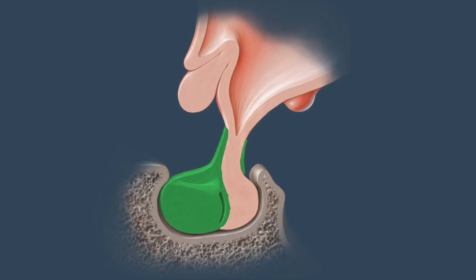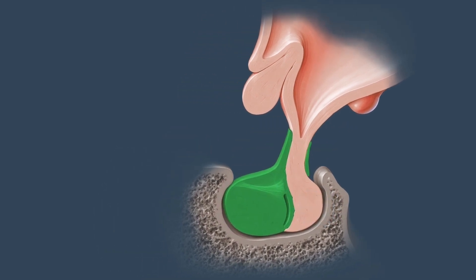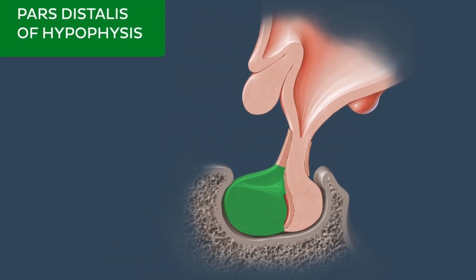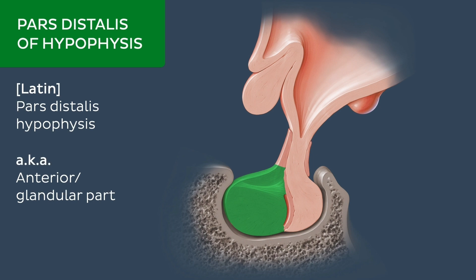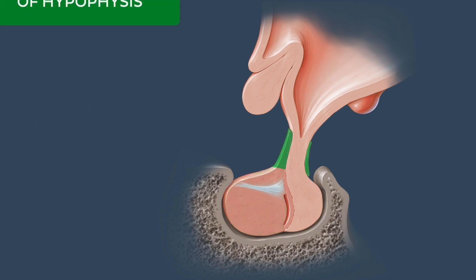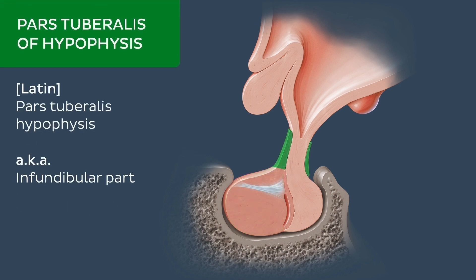The adenohypophysis comprises three parts. The pars distalis, also known as the anterior or glandular part, is the largest component and is responsible for most of the secretory activity of the adenohypophysis. The pars tuberalis, or infundibular part, is a posterior extension of the anterior lobe that extends into the infundibular stalk that we saw earlier.